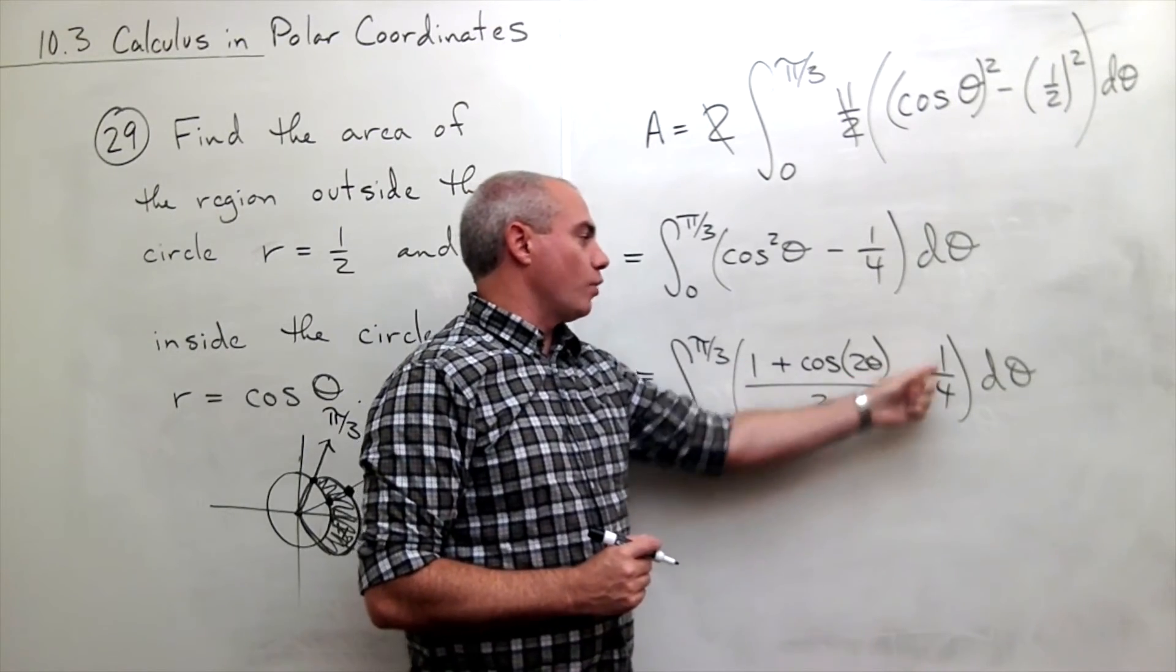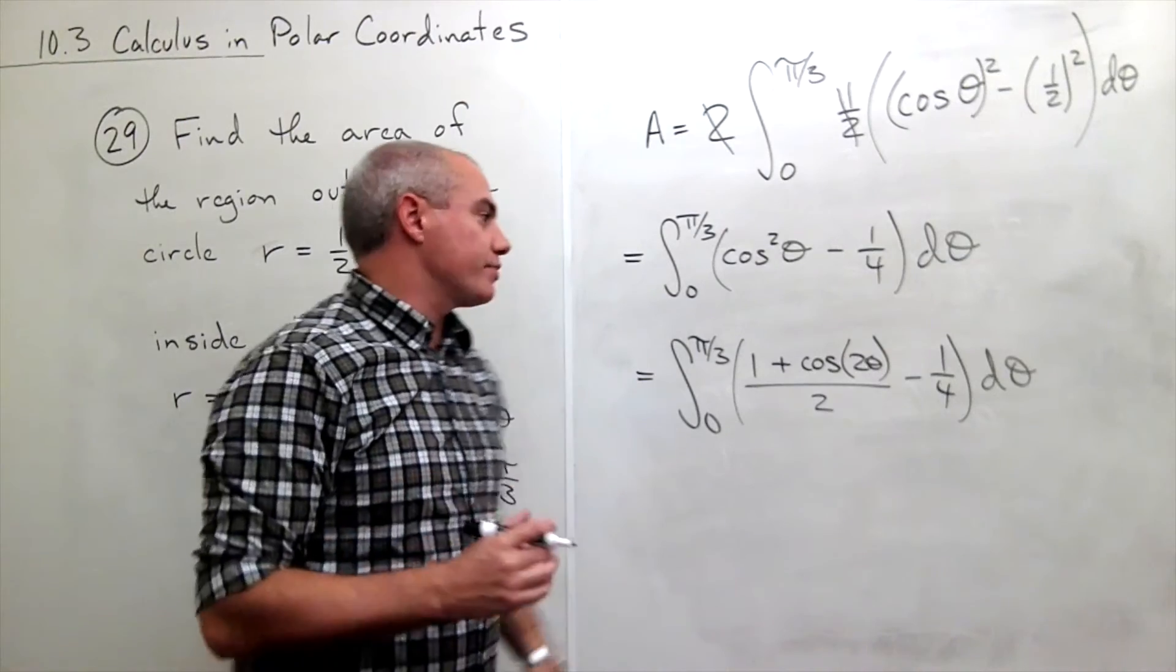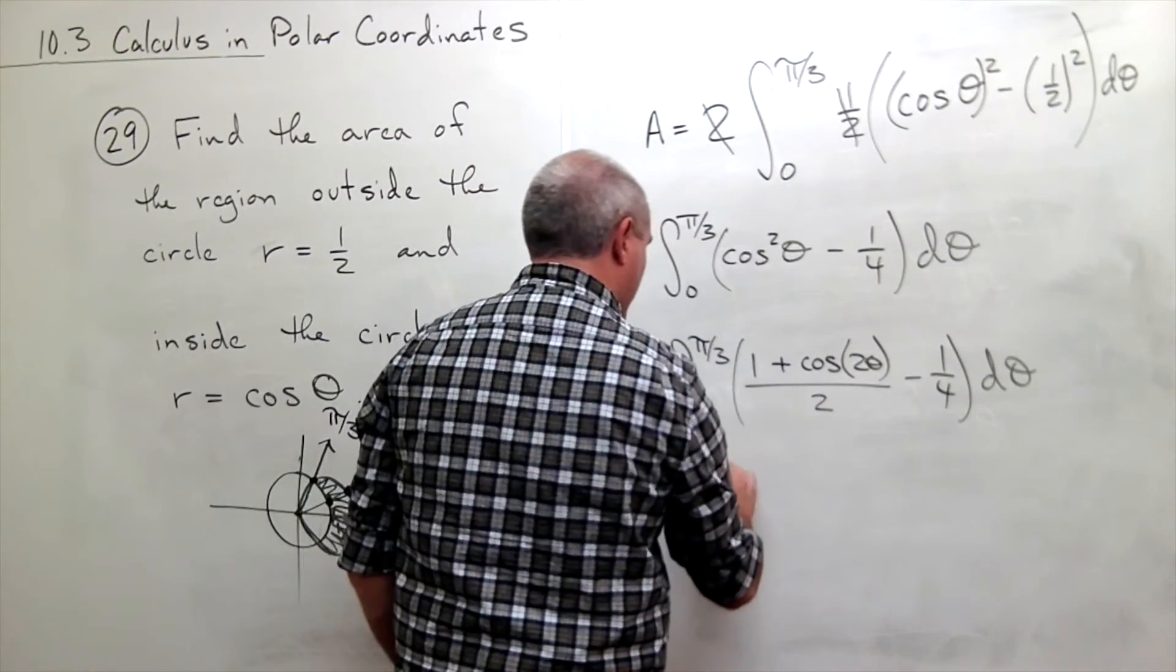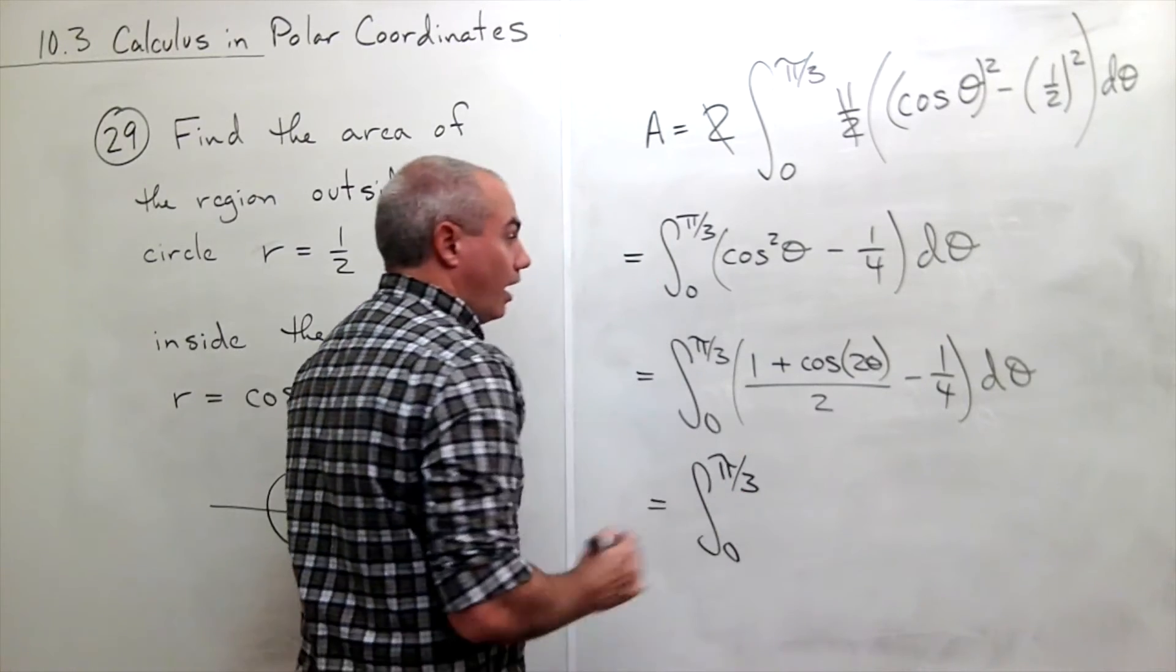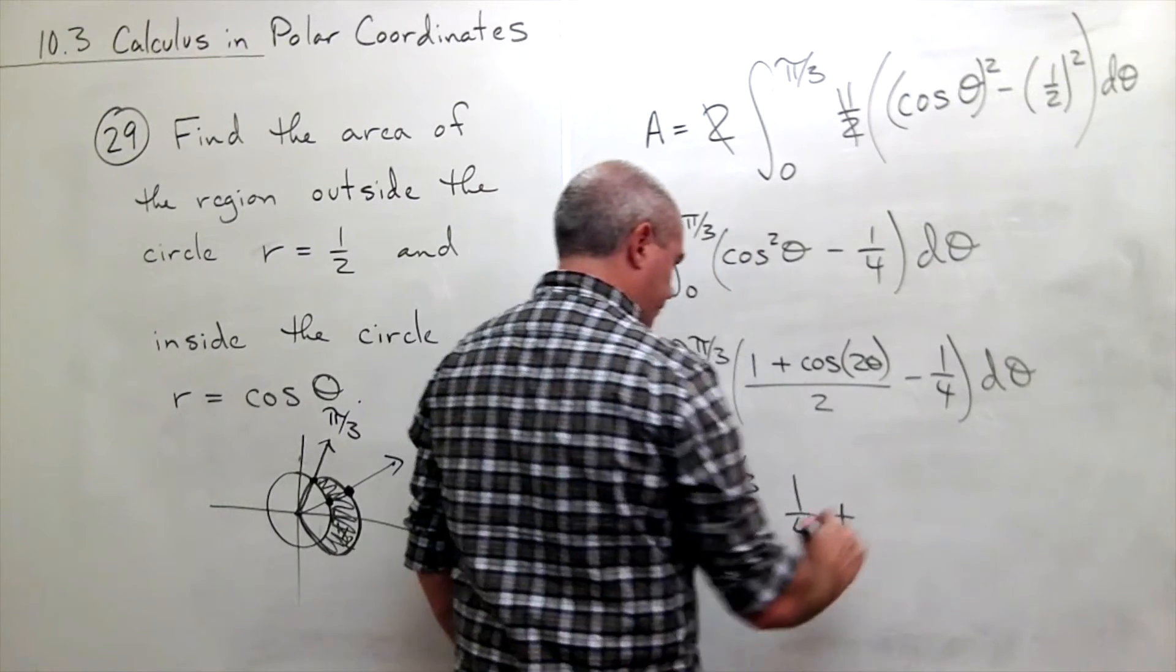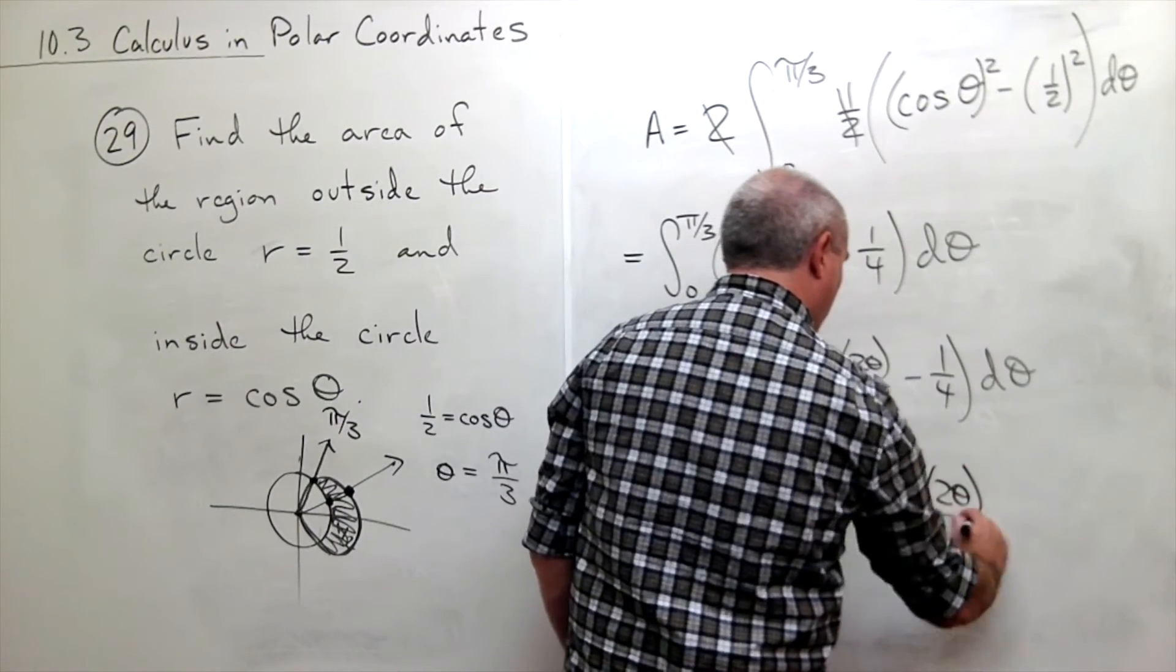One-half minus one-fourth is positive one-fourth. So let's rewrite this one more time a little cleaner. So I have integral from 0 to pi over 3 of, now we have one-fourth plus cosine of 2 theta over 2,